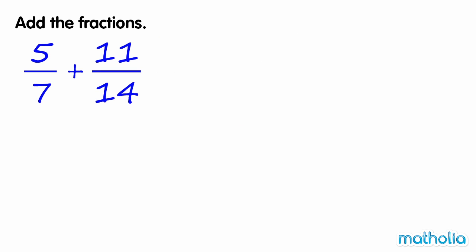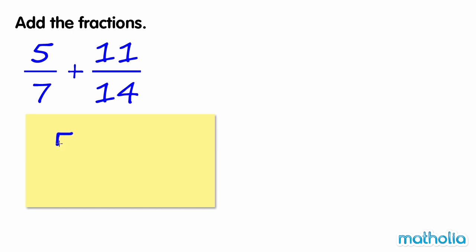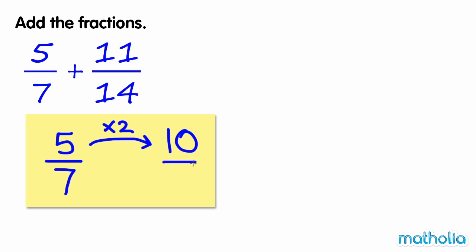Add the fractions. Find 5 7ths plus 11 14ths. The denominators of these fractions are not the same — they are unlike fractions. Let's find an equivalent fraction of 5 7ths where the denominator is 14. 5 7ths equals 10 14ths.